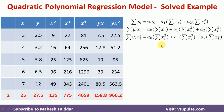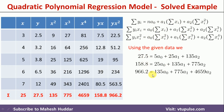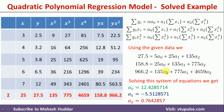These are the three equations we have. Using these equations, we can calculate a0, a1, and a2. Once I put all the values into the equations, these become three simultaneous equations. Solving them, we get a0 as 12.4, a1 as minus 5.51, and a2 as 0.76. These are the three values we obtained.